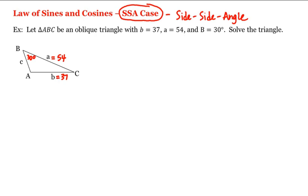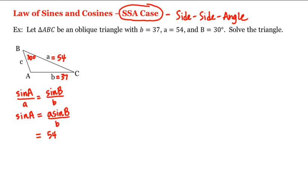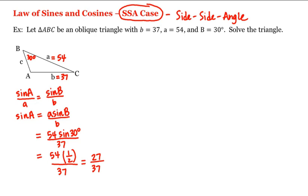And since we're given little a, we can use the law of sines to find capital A. Namely, sine of A divided by a is equal to sine of B divided by little b, or sine of A is equal to a times sine of B divided by b, which is equal to 54 times the sine of 30 degrees divided by 37. The sine of 30 degrees is one-half, so this is 54 times one-half divided by 37, which equals 27 divided by 37, approximately 0.7297.